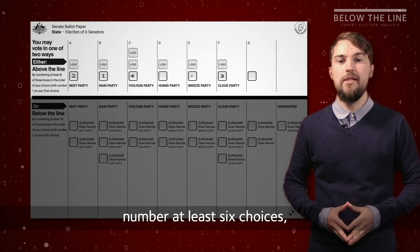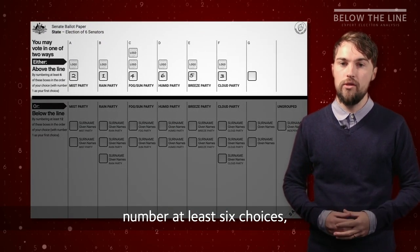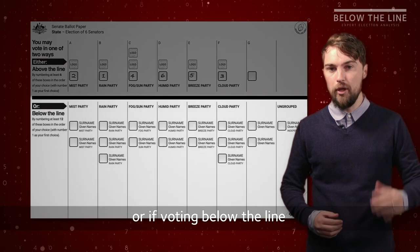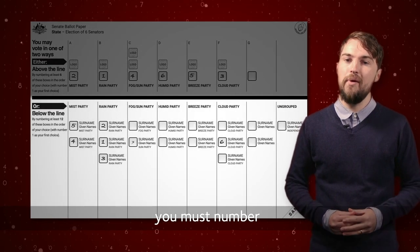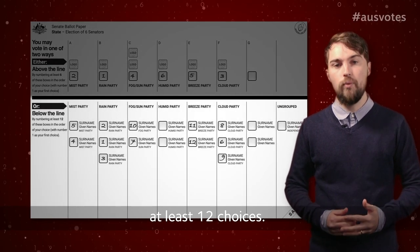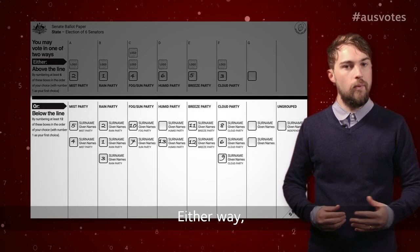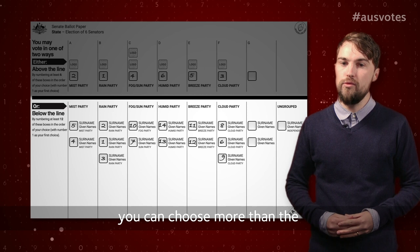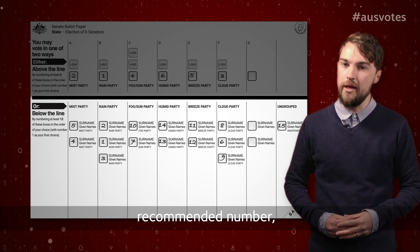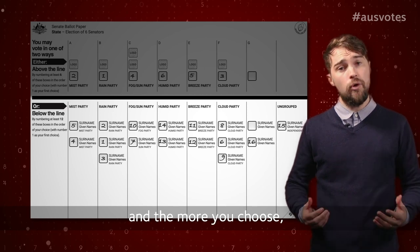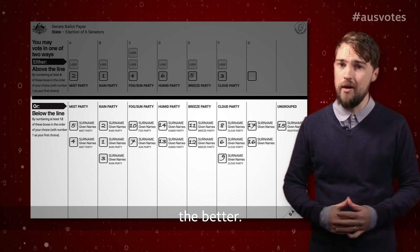Above the line, number at least six choices. If voting below the line, you must number at least twelve choices. Either way, you can choose more than the recommended number, and the more you choose, the better.